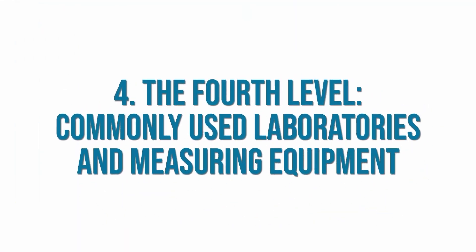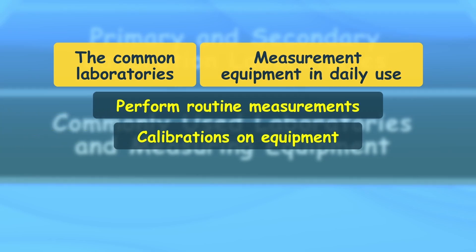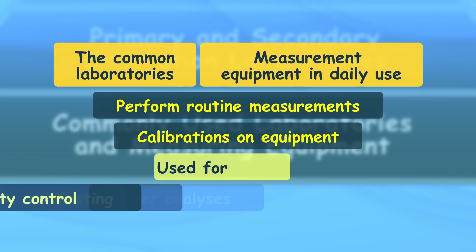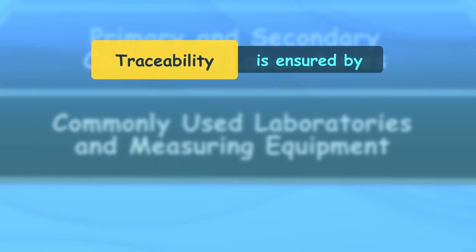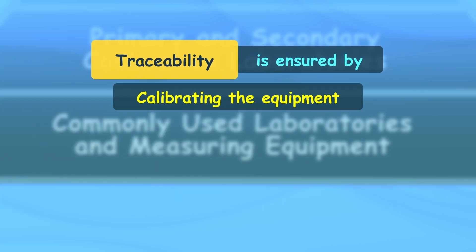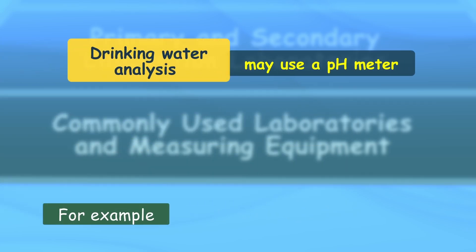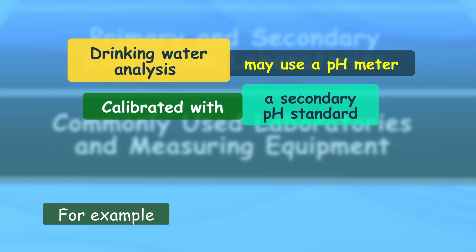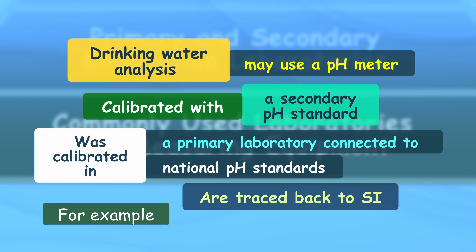At the base of the pyramid are the common laboratories and measurement equipment in daily use. These laboratories perform routine measurements and calibrations for quality control, testing, and other analyses. Traceability at this level is ensured by calibrating equipment through the traceability chain. For example, a laboratory performing drinking water analysis may use a pH meter calibrated with a secondary pH standard, which was calibrated in a primary laboratory connected to national pH standards, all traced back to the SI.